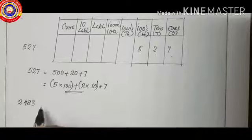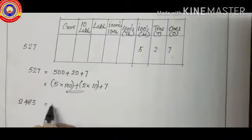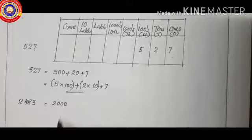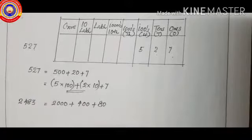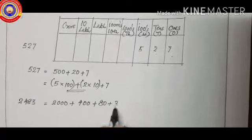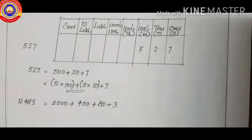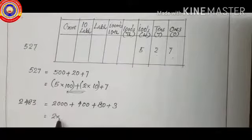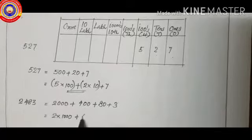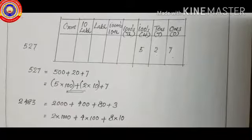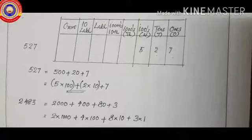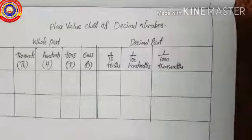Let's do one more example: 2483. That is 2000 plus 400 plus 80 plus 3, which means 2 into thousand plus 4 into hundred plus 8 into ten plus 3 into one.